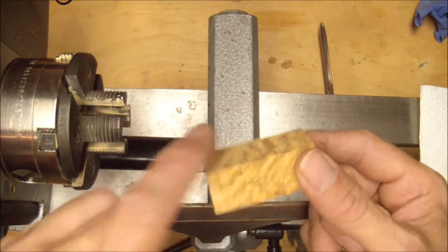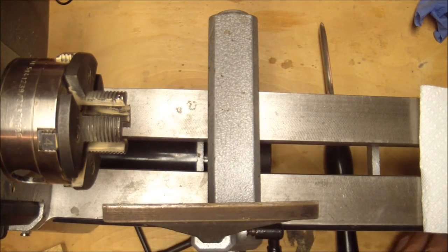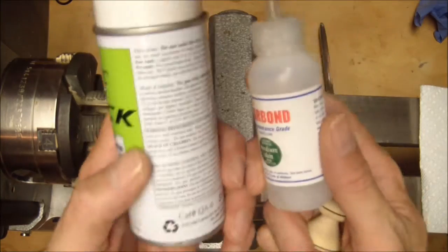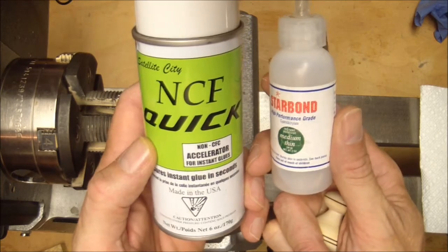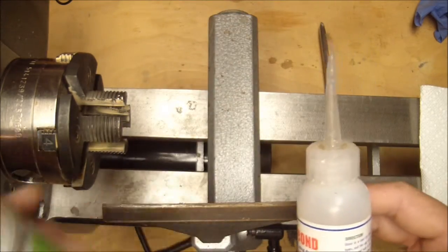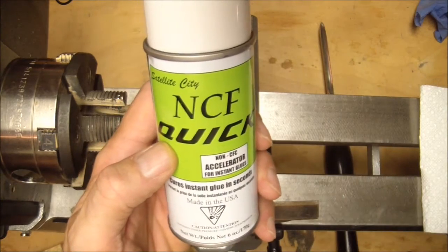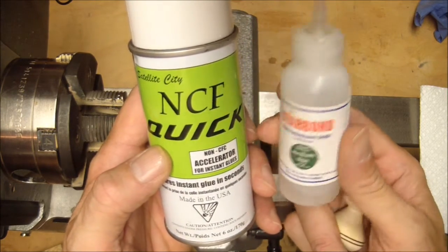So we'll get started here. You'll need a little super glue and some accelerator. This will be either for repairing little holes and pockets in the blank itself and then ultimately for gluing the magnet into the mushroom.